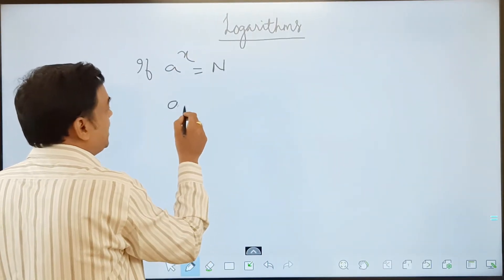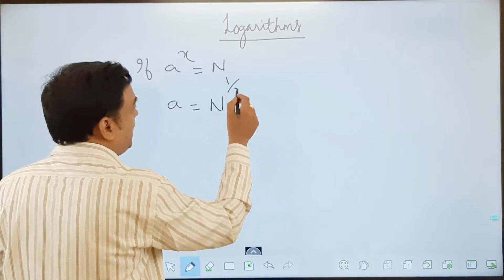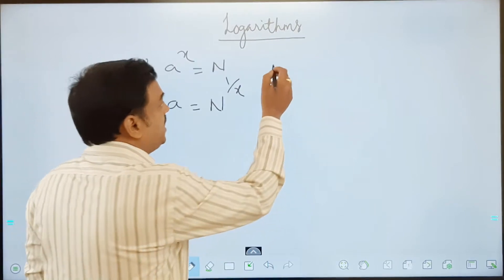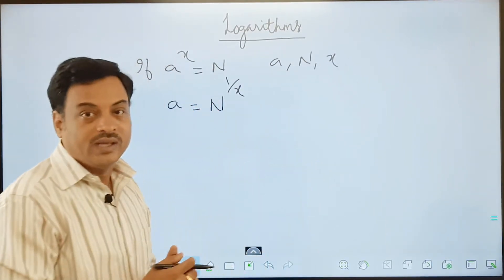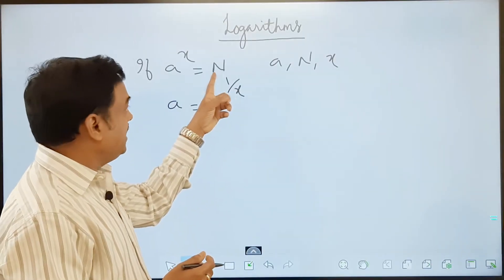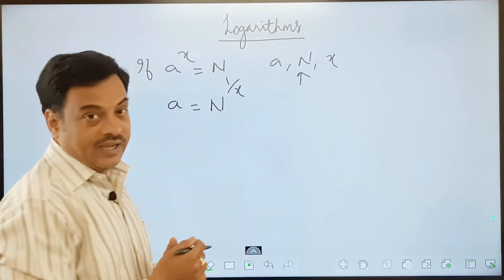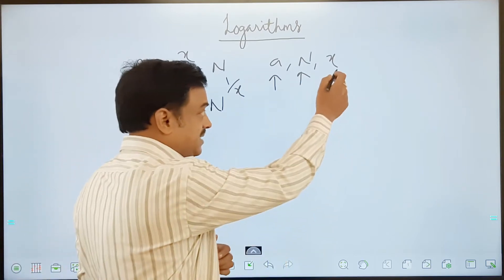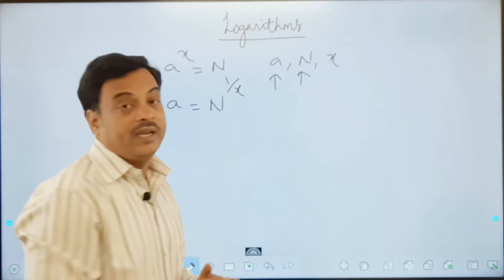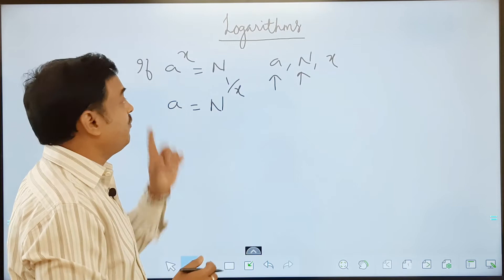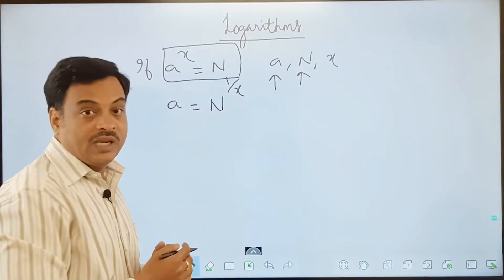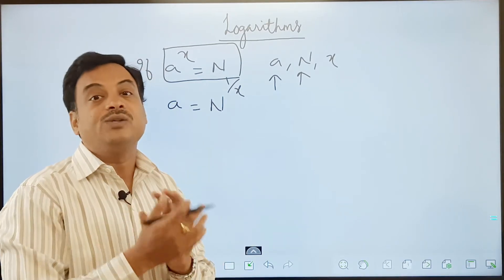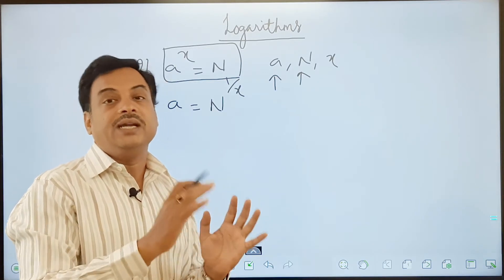Now if I send this x to the other side, I can say the same thing as a is equal to n to the power of 1 by x. Now I am writing a in terms of n and x. So in the previous case, observe there are three things — a, n and x. I can write n in terms of a and x. I can write a in terms of the other two, that is n and x. Now you tell me the method to write x in terms of a and n. Observe the position of x — it is in the power position. That means I am trying to find the value of the power in terms of the other two values given to me.